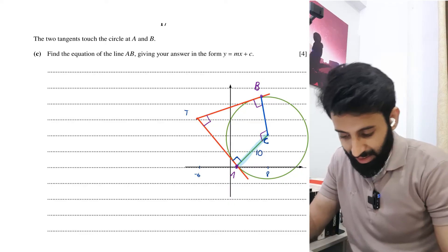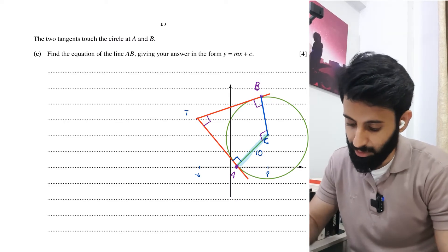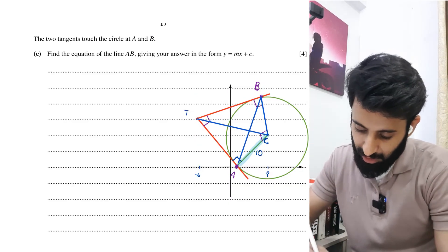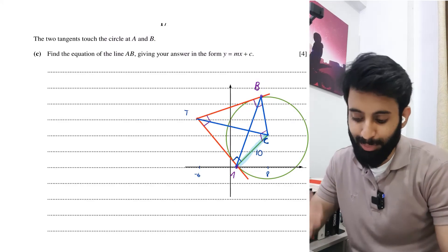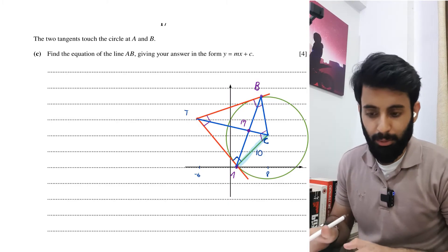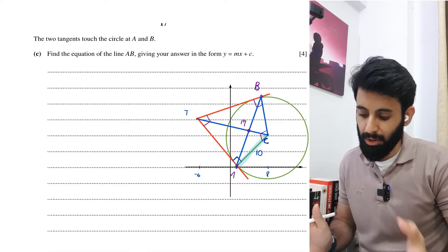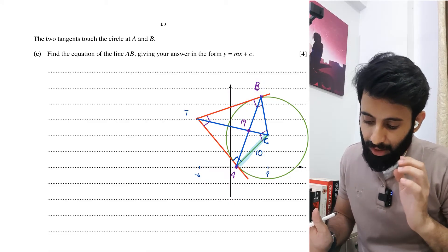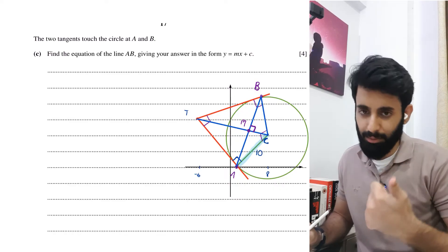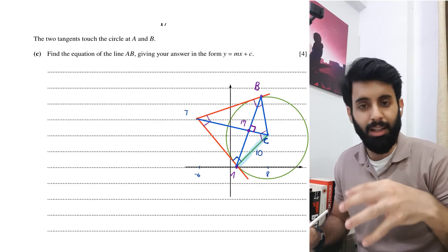To find the equation of AB, we first need its gradient. The gradient of CT is (6 minus 4) over (minus 6 minus 8) = 2 over minus 14 = minus 1 over 7. The gradient of AB is the negative reciprocal of that, which equals 7.